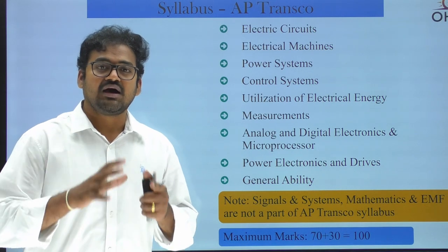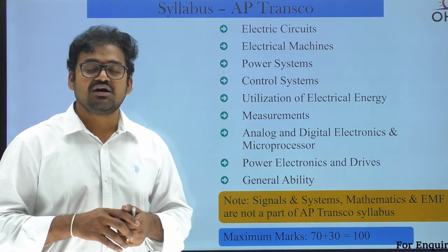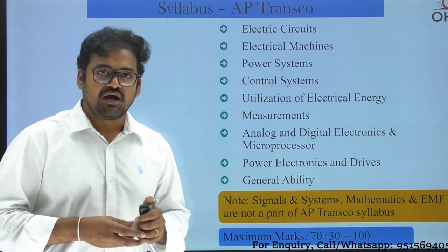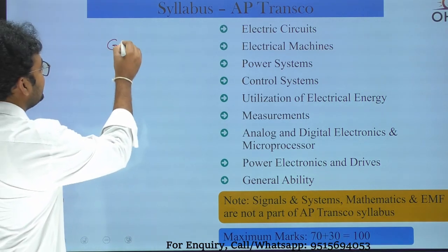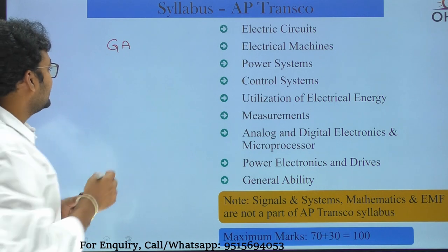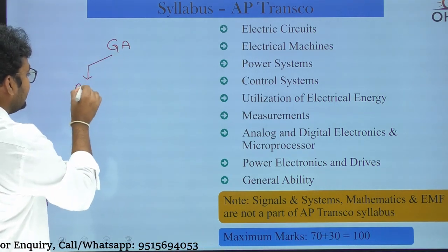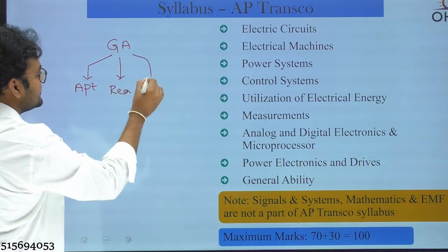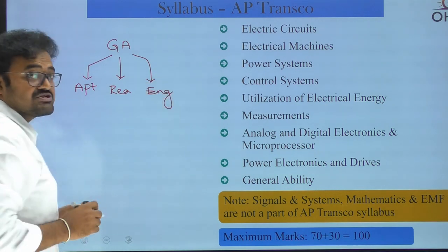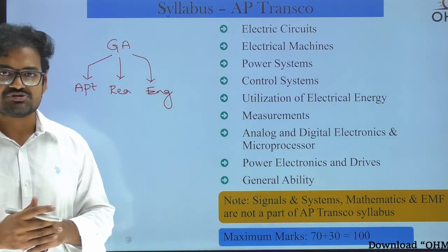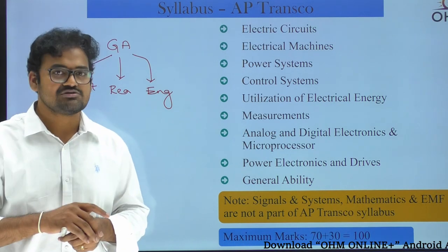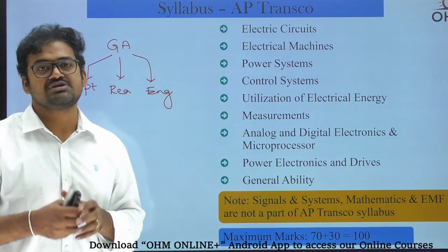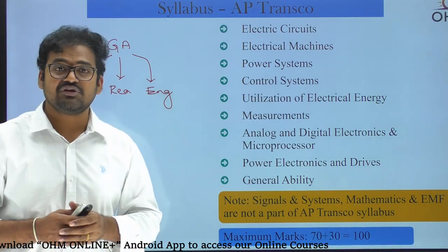The AP Transco examination is conducted for 100 marks, out of which 70 marks are from technical subjects and 30 marks from general ability. General ability in AP Transco is a combination of aptitude, reasoning, and general English. General studies is not part of general ability in AP exams — only aptitude, reasoning, and English are included. Importantly, signals and systems, mathematics, and EMF are not part of AP Transco syllabus.